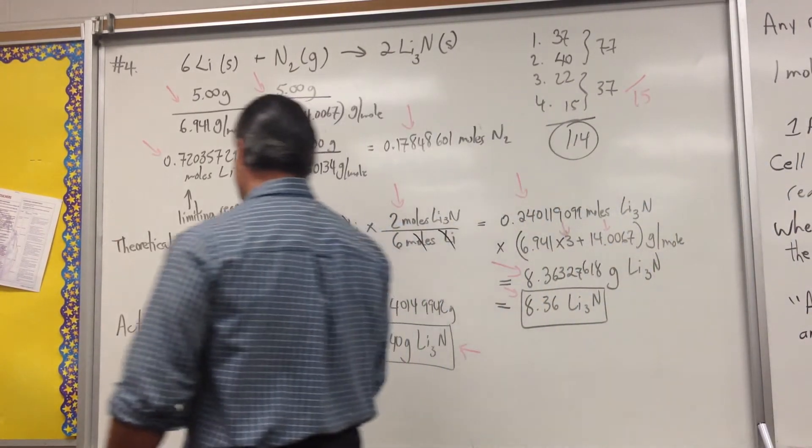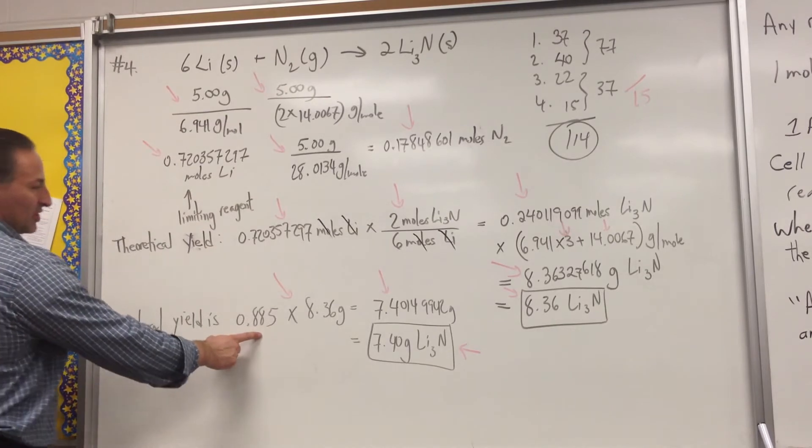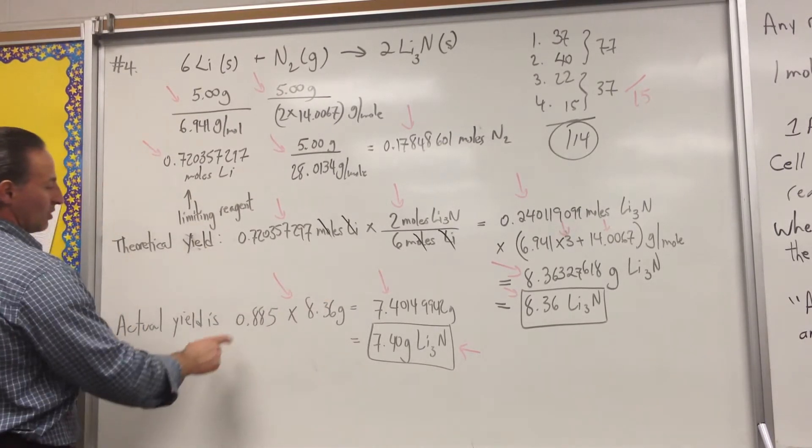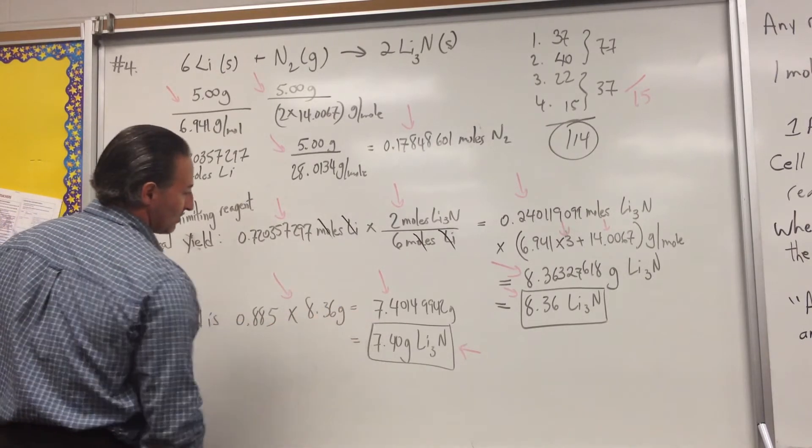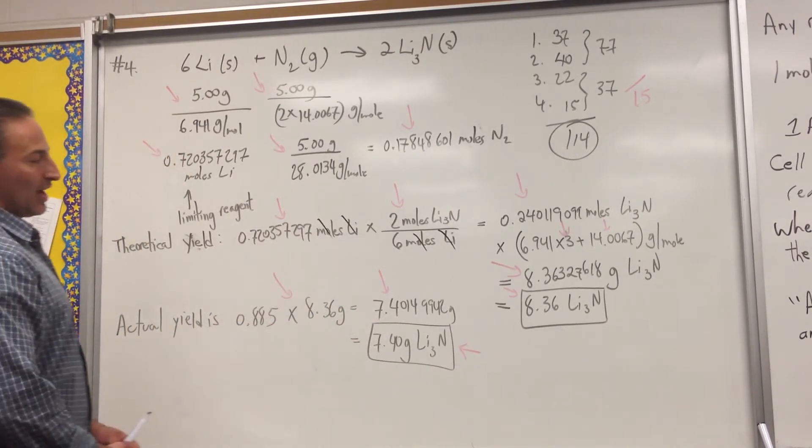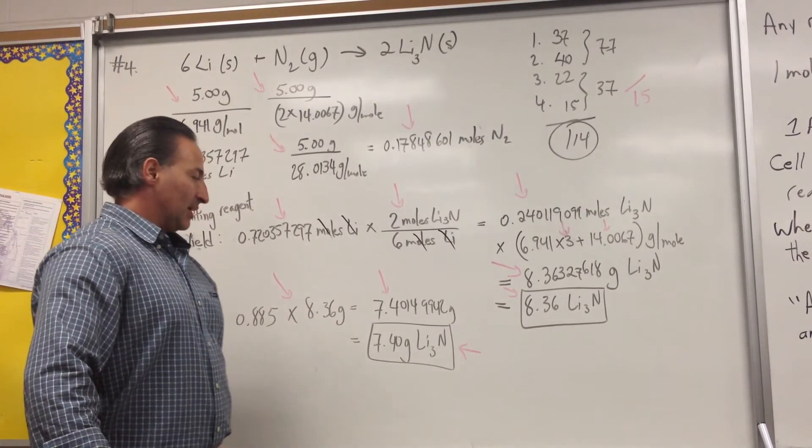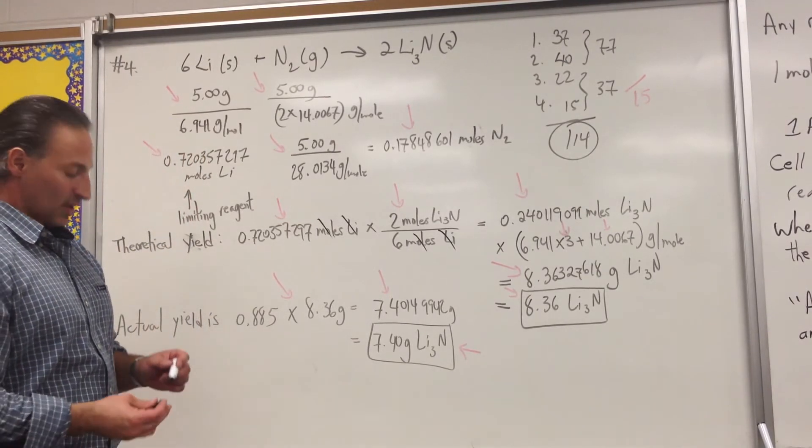Now, the actual yield it tells us is 88.5% of the theoretical yield. So, 0.885 times 8.36 gives us 7.401. So, in actual fact, we should expect to get 7.4 grams of lithium nitride from this reaction.